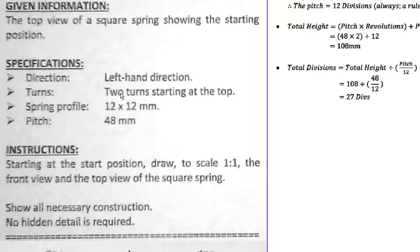Since there are two turns, you'll have two pitch heights — a 48 on top of a 48 — and then you also have to add the profile height which is 12. That gives you the total height: 2 times 48 plus 12 equals 108. That is how you determine the total height when it isn't given.